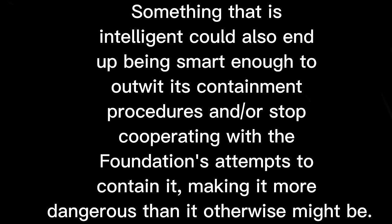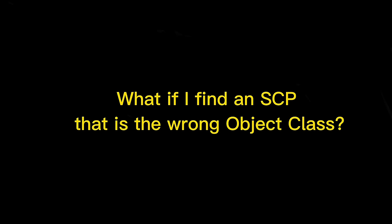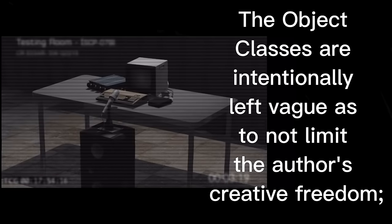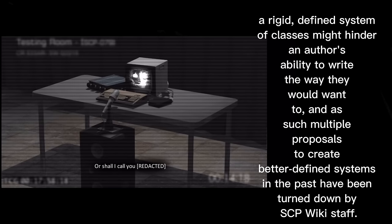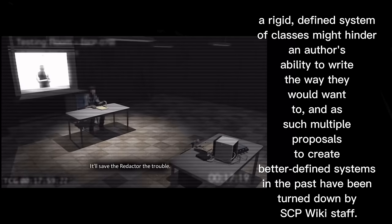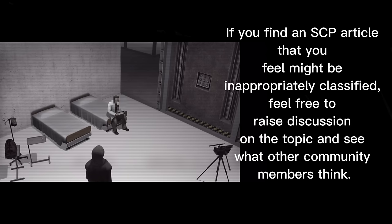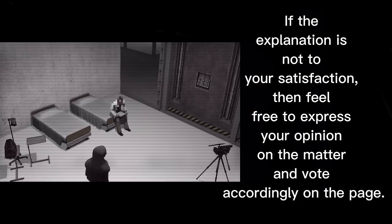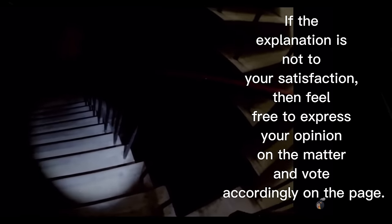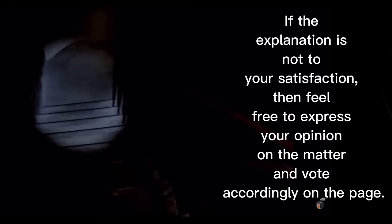What if I find an SCP that is the wrong object class? The object classes are intentionally left vague as to not limit the author's creative freedom. A rigid, defined system of classes might hinder an author's ability to write the way they would want to, and as such multiple proposals to create better defined systems in the past have been turned down by SCP Wiki staff. If you find an SCP article that you feel might be inappropriately classified, feel free to raise discussion on the topic and see what other community members think. If the explanation is not to your satisfaction, feel free to express your opinion on the matter and vote accordingly on the page.